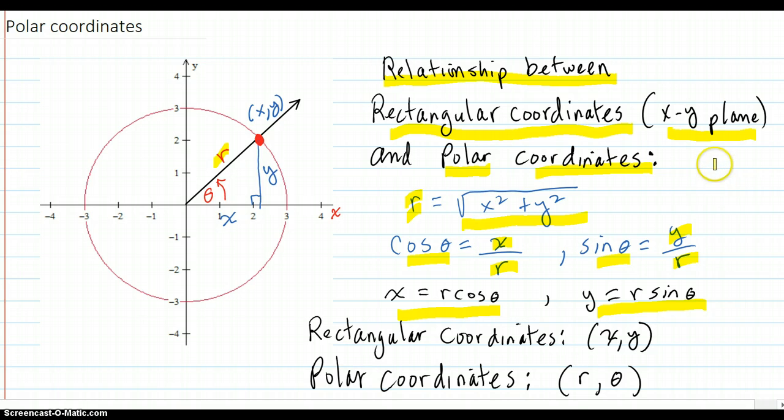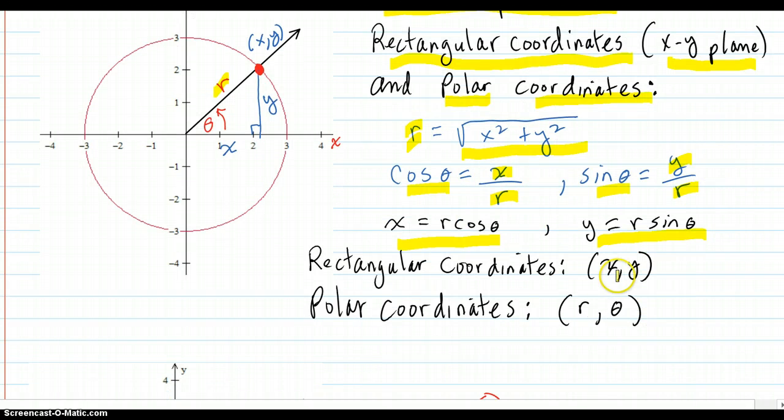So in the rectangular coordinate system you have your x-y defining your point, and in polar coordinates you have the radius and the angle, so the angle pointing toward the point and the r radius out to it.